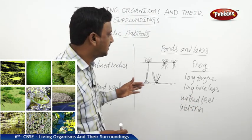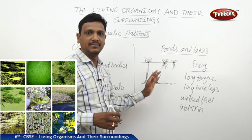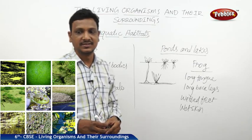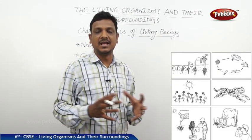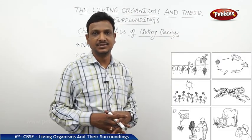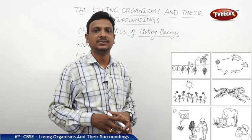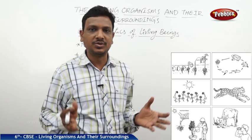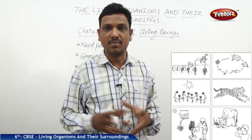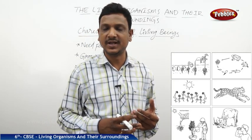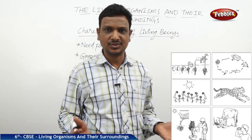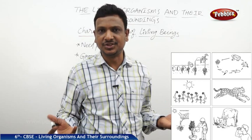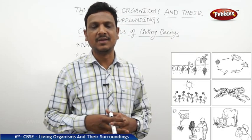These are the adaptations found in plants and animals that live in ponds, lakes, and oceans. We have seen the habitat, organisms, and non-living things that make up the habitat. The environment is made up of biotic and abiotic components. Biotic means plants, animals, and microorganisms. Abiotic means soil, rocks, water, temperature, and humidity — all these come under abiotic components.